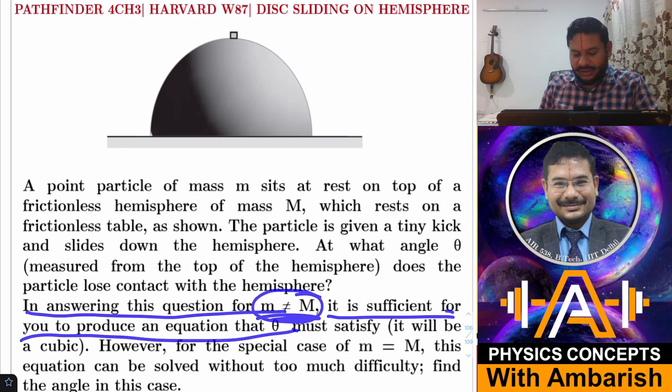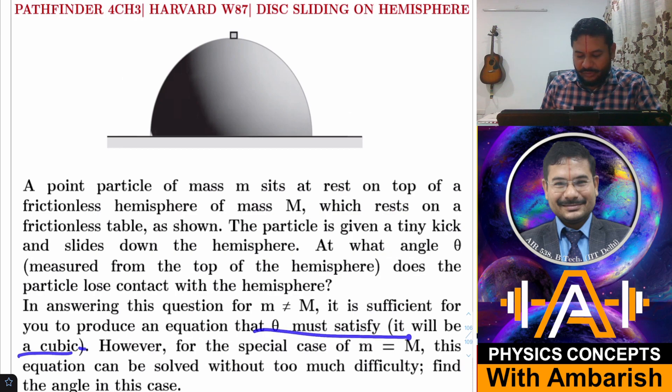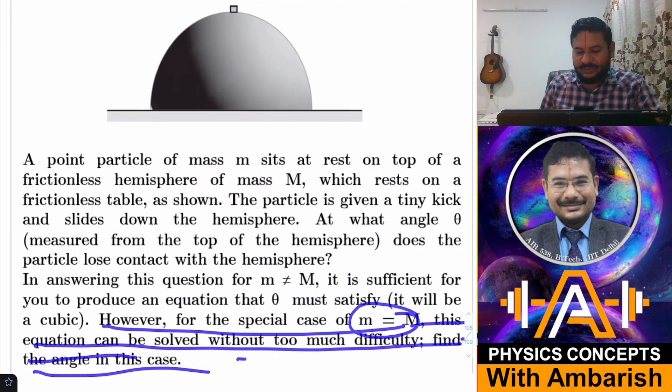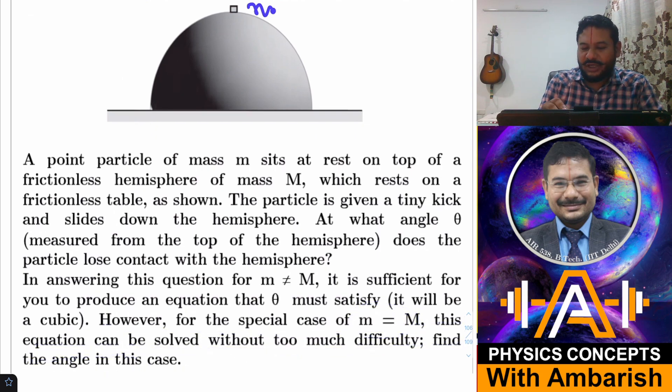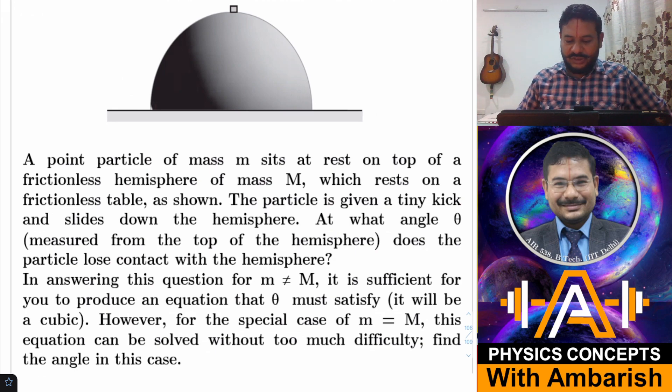In answering this question for m not equal to M, it is sufficient to produce an equation that theta must satisfy. So we only want to make an equation in theta for the first part. It will be a cubic equation. However, for the special case of m equal to M, this equation can be solved without too much difficulty. Find the angle in this case. The pathfinder question only focuses on the second part when m equals M, but I'll be solving the general case as well.